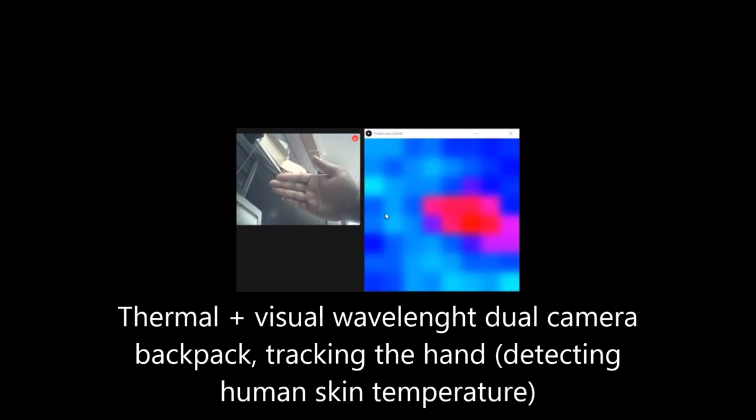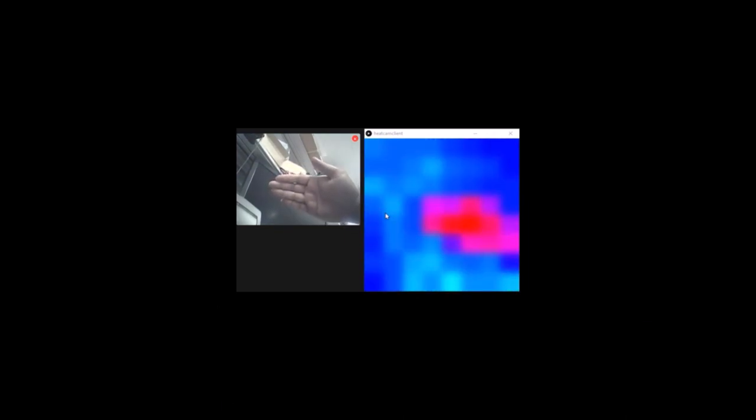The camera system developed uses a dual camera thermal and visible wavelength backpack which sends images over Wi-Fi and can also navigate and control the cockroach through neural stimulation.